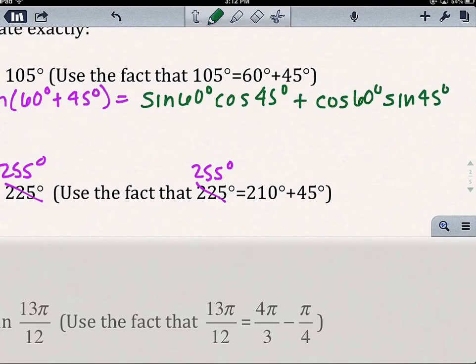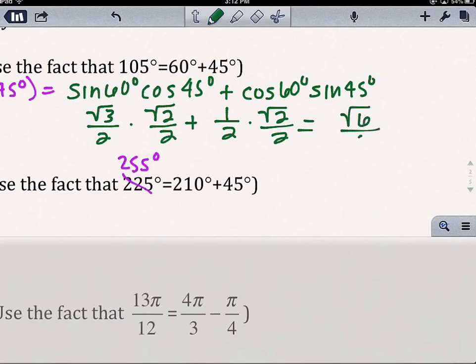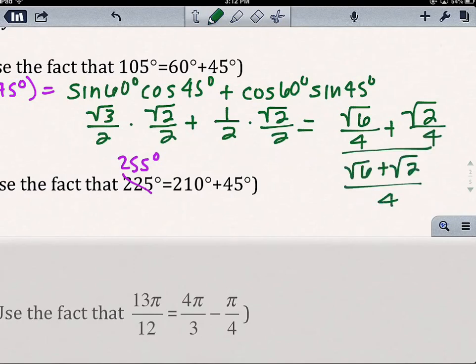You need to have either the triangles or these specific trig functions memorized. I know sin(60°) = √3/2. Cos(45°) = √2/2. Cos(60°) = 1/2. Sin(45°) = √2/2. So, I get √6/4 + √2/4. I cannot combine √6 and √2 because they're not like terms. So I'm just going to leave it (√6 + √2)/4.